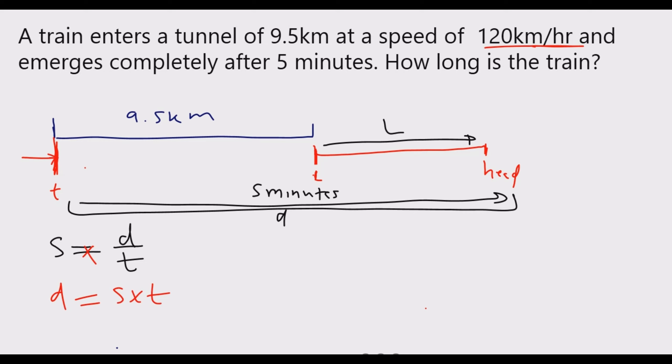Now what is speed? Speed is in kilometers per hour. What is time? It's in minutes. So we need to convert these to hours. In one hour, how many minutes are there? There are 60 minutes. Then how many hours are in five minutes? We cross multiply, so 60x is equal to 5.